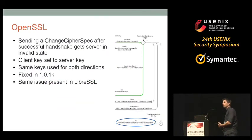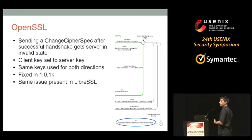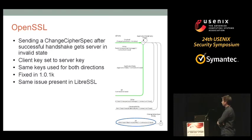OpenSSL was the implementation with 16 states. After a successful handshake, if you send an additional change cipher spec — a second one — the implementation switches keys, causing the server to use the server keys in both directions for sending and receiving. Both sides end up communicating with the same key. This was not considered a real security problem since it only occurs post-handshake, but it is definitely not behavior you want. It is now fixed, though I recently found LibreSSL still has the same problem and they are deciding whether to fix it.